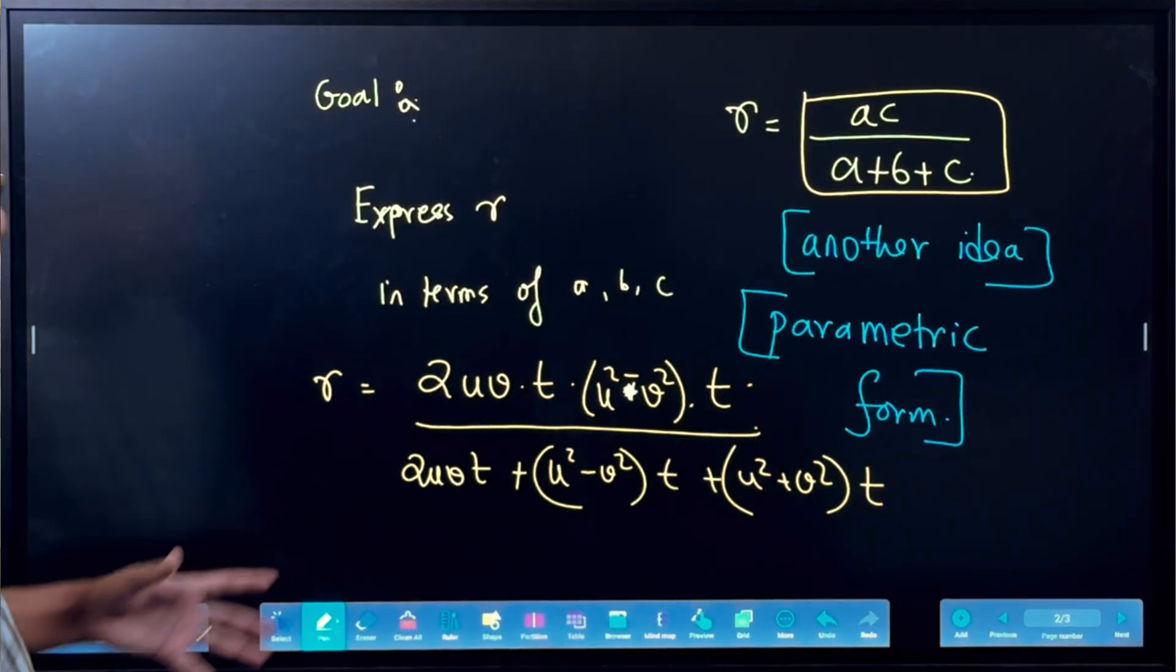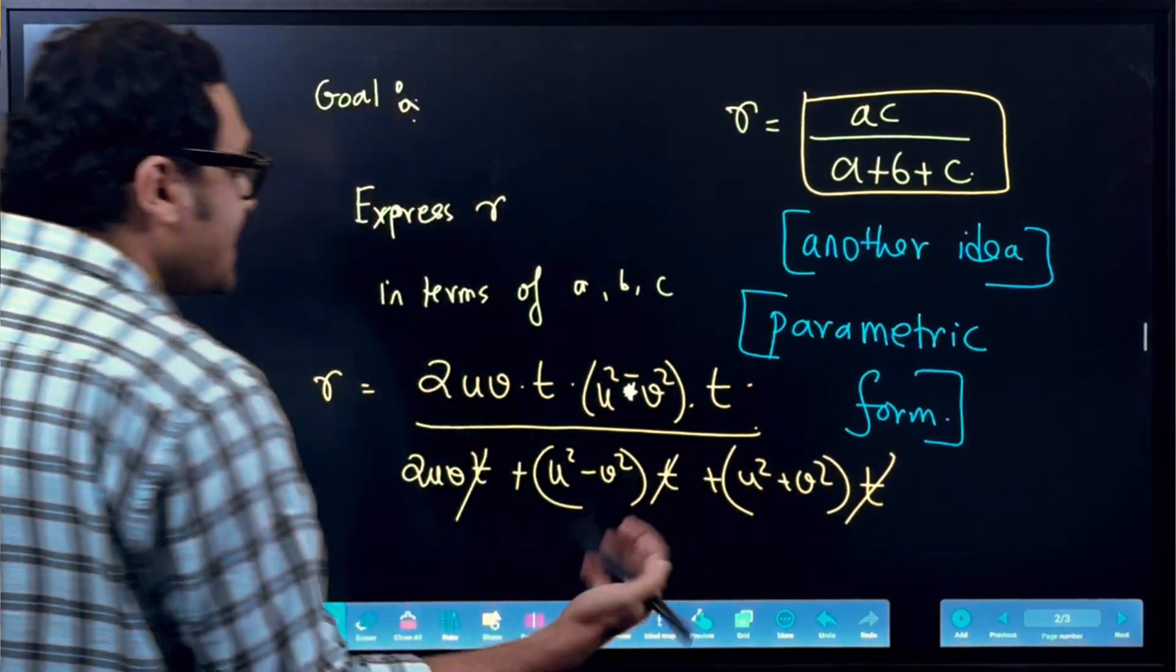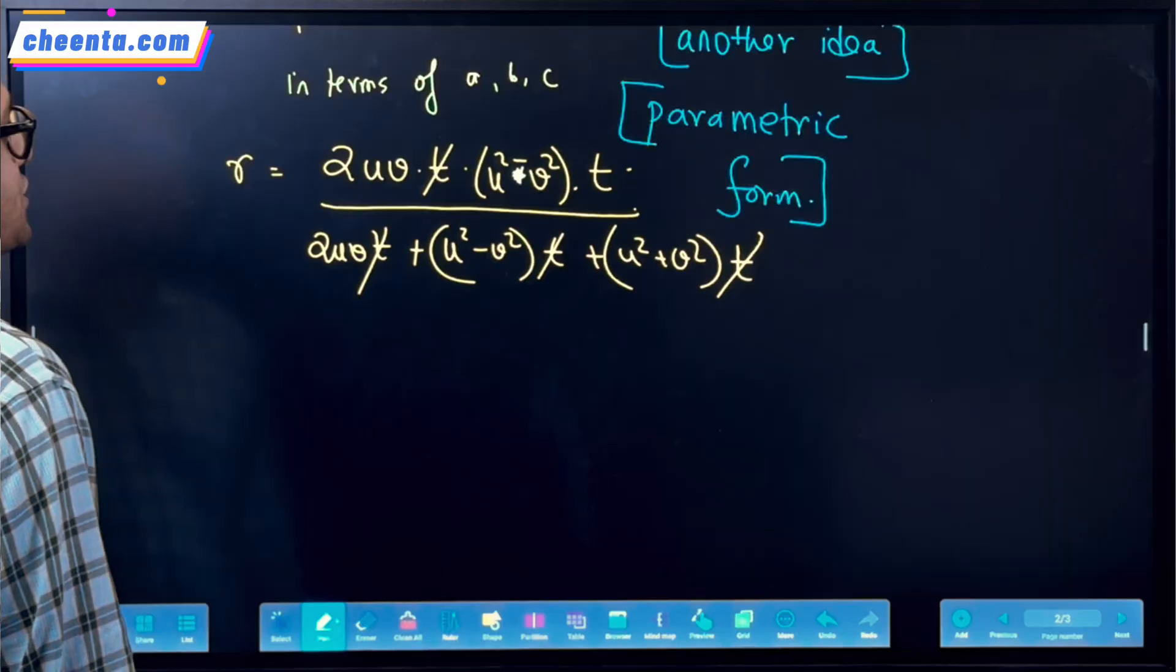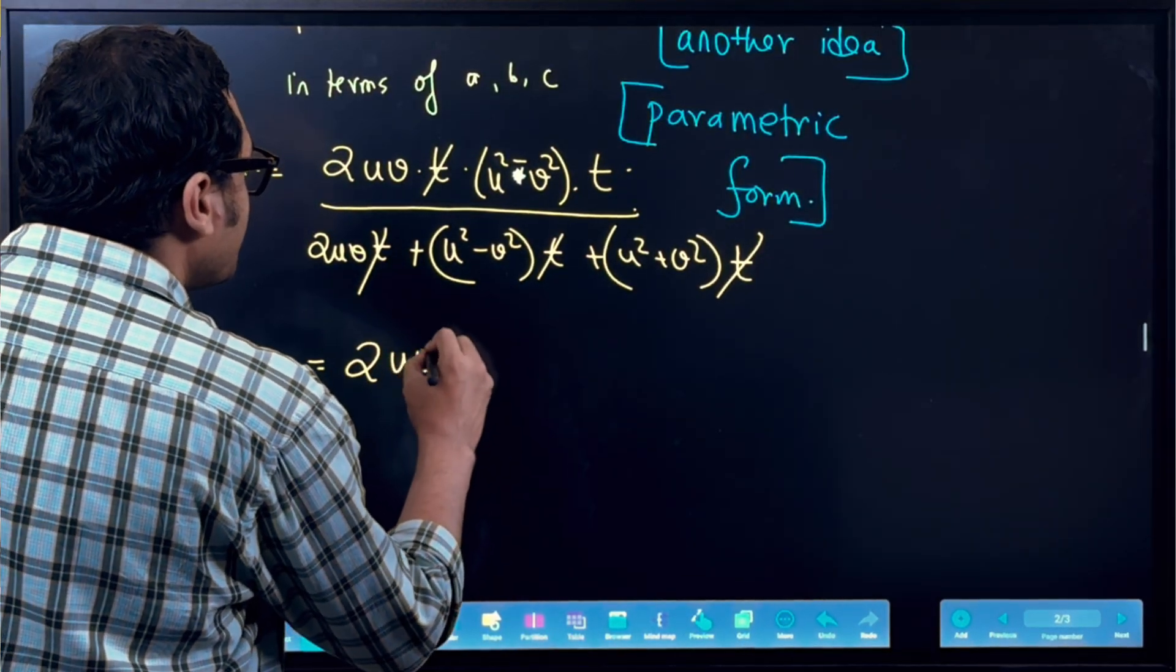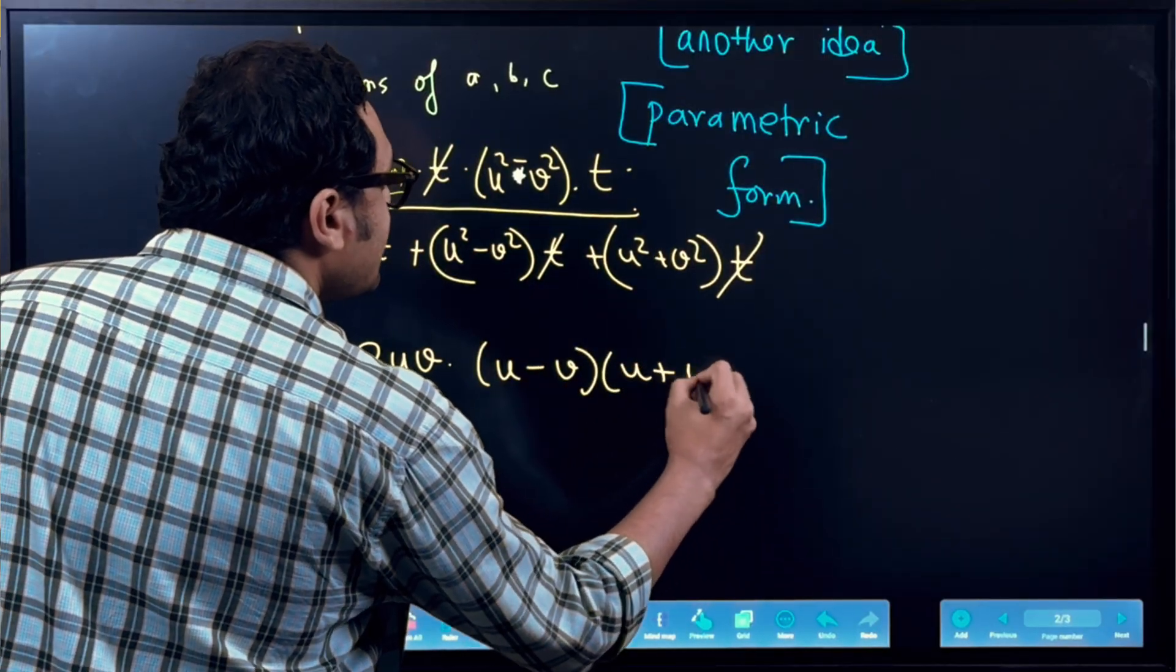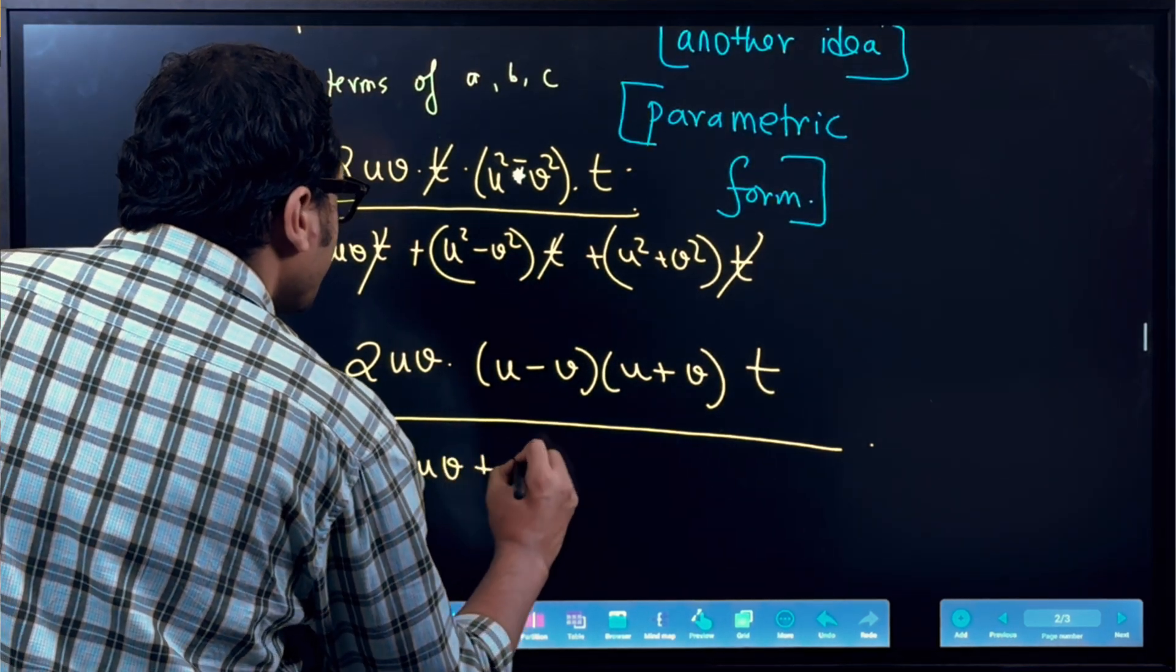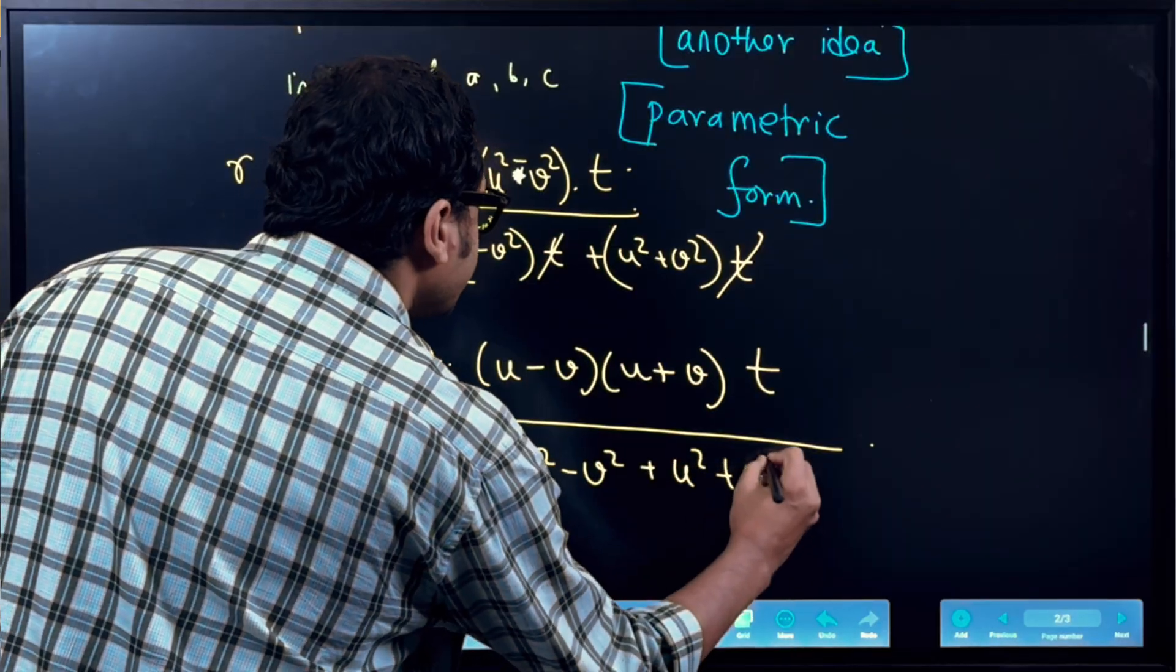So first thing first, the T cancels off, one of the T's cancel off, we can just take it common and cancel it off. And then what you can do is the simplification. This is 2UV U minus V times U plus V times T divided by 2UV plus U square minus V square plus U square plus V square, so these two cancels off.